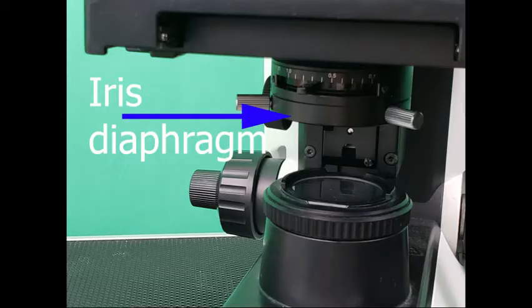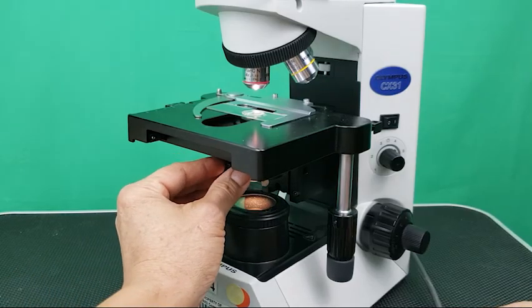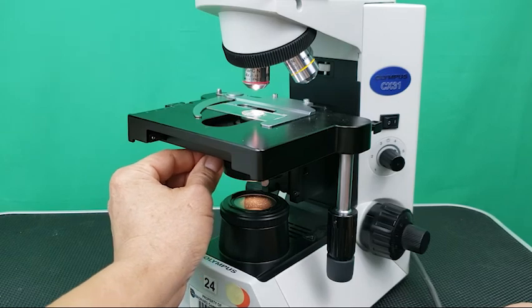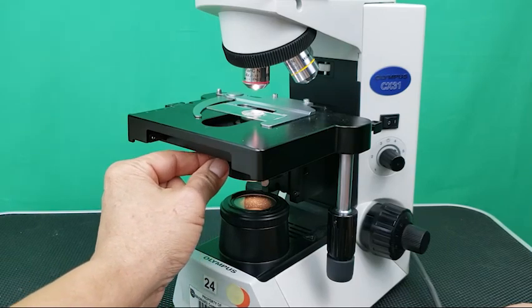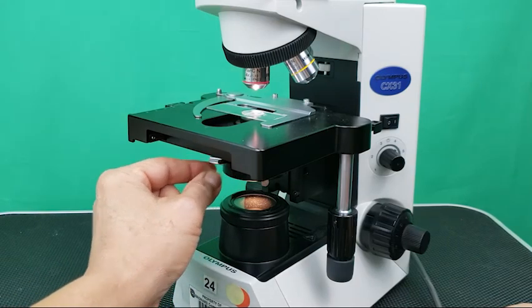Iris diaphragm: Located under the condenser, this regulates the amount of light passing through the specimen. Iris diaphragm lever: A lever that opens and closes a ring of metal shutters of the iris diaphragm.